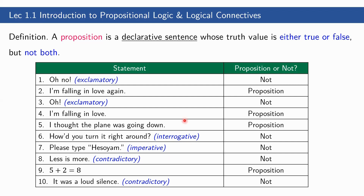We have here 10 sentences. Let us determine whether they are propositions or not. First, 'Oh no!' — this is not a proposition because it is an interjection and an exclamatory sentence. Second, 'I'm falling in love again' — this is a proposition because it is a declarative sentence. Third, 'Oh!' — this is not a proposition, just like number one. Fourth, 'I'm falling in love' — this is also a proposition. Fifth, 'I thought the plane was going down' — also a proposition. Sixth, 'How'd you turn it right around?' — this is not a proposition because it is an interrogative sentence, a question.